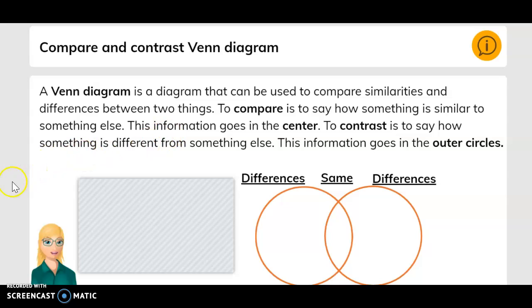A Venn diagram is a diagram that can be used to compare similarities and differences between two things. To compare is to say how something is similar to something else. This information goes in the center. To contrast is to say how something is different from something else. This information goes in the outer circles.